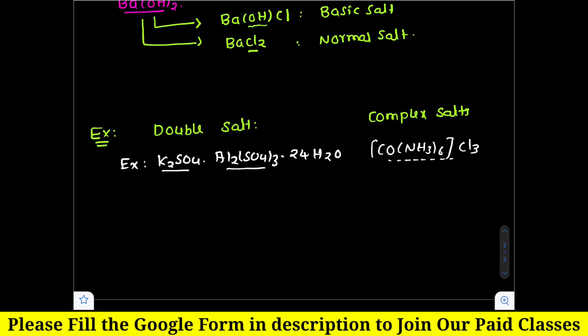Potassium alum is a double salt containing two types of hydrated salts. Another example is Mohr's salt, which is formed from ferrous sulphate and ammonium sulphate along with water of crystallization. So these are the examples of double salts.